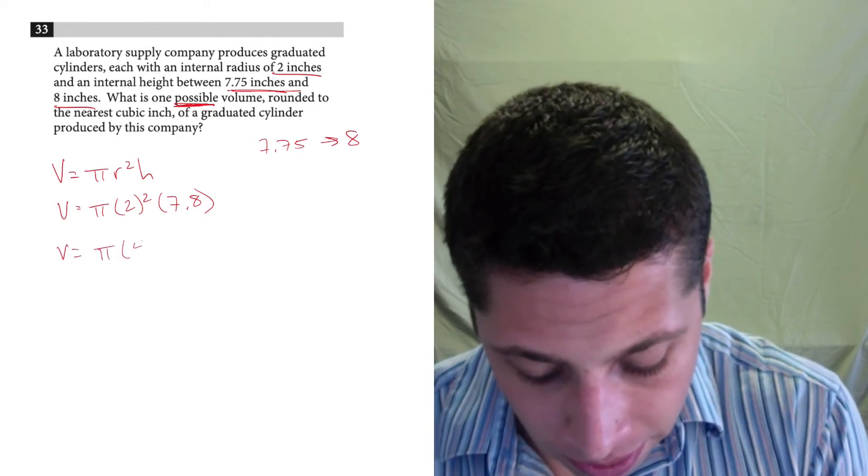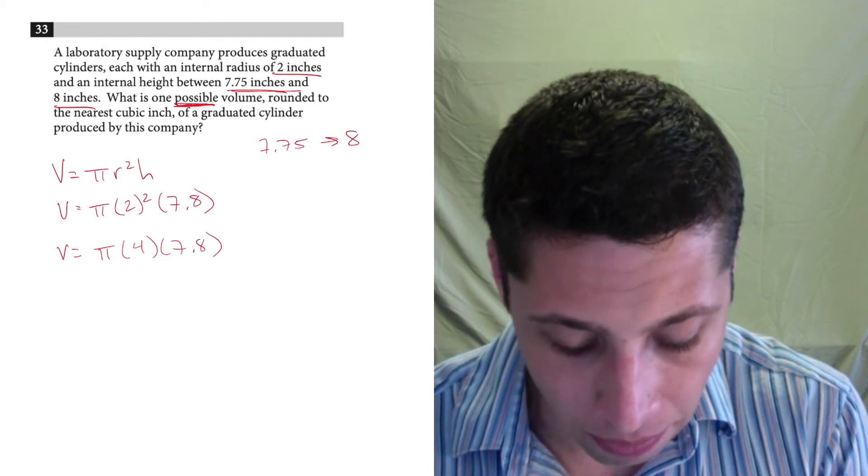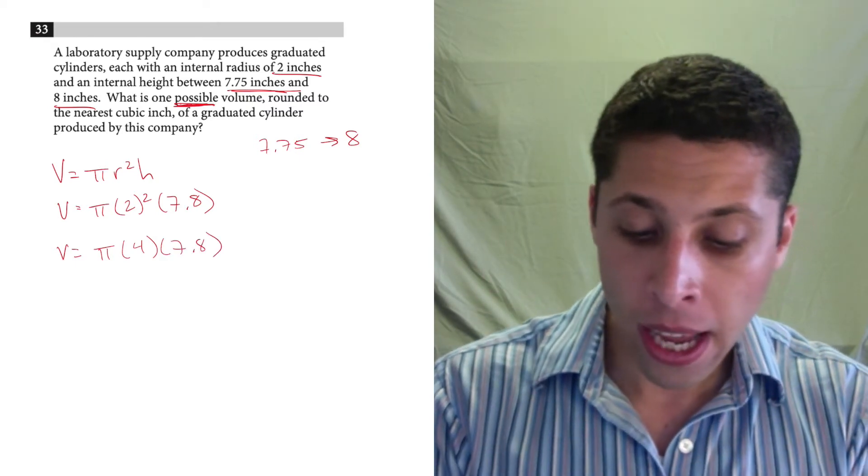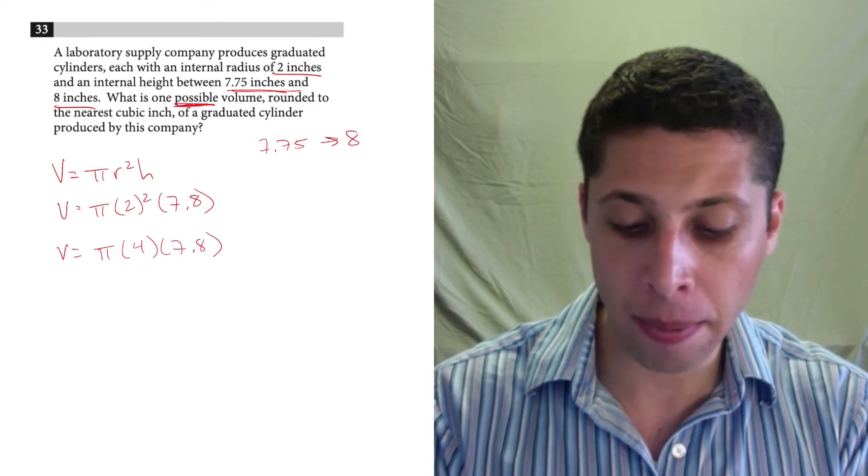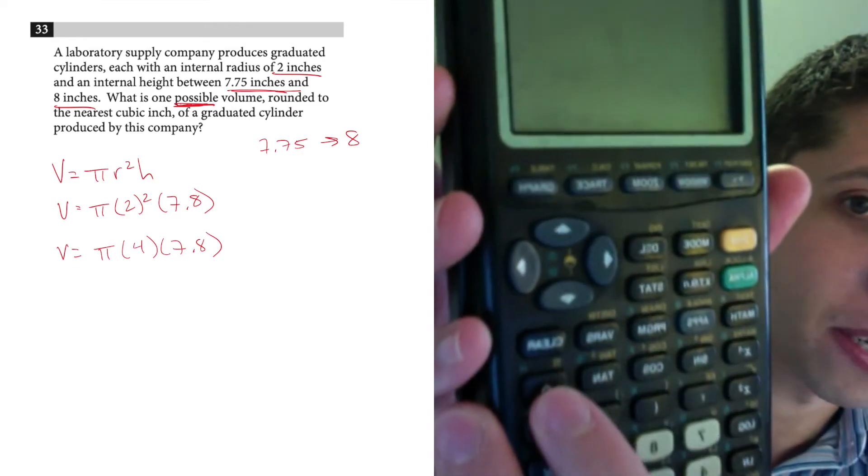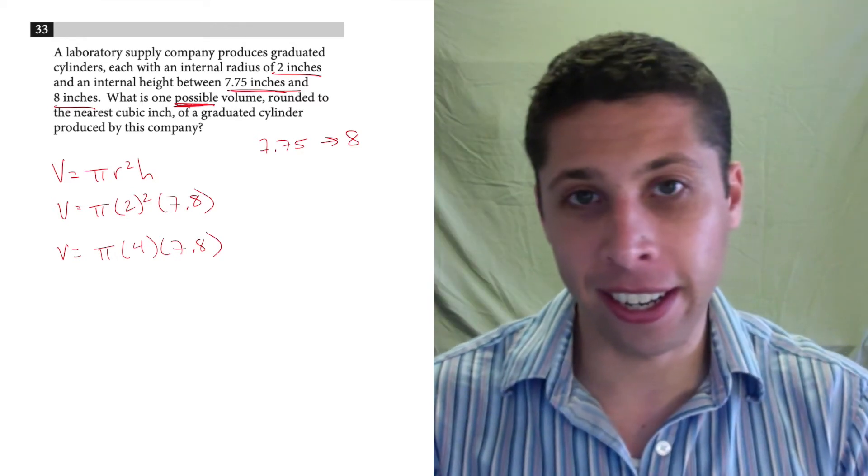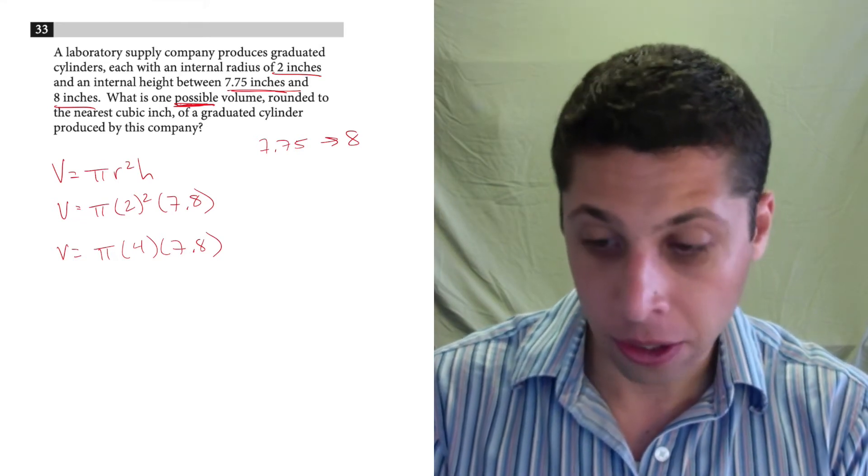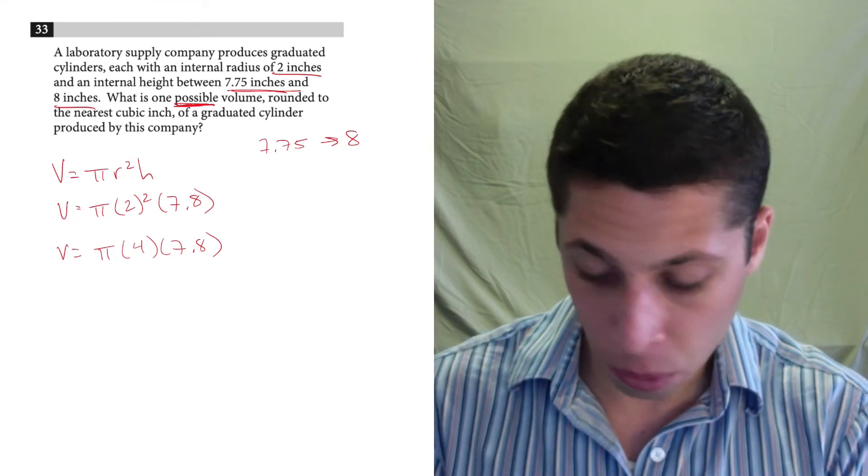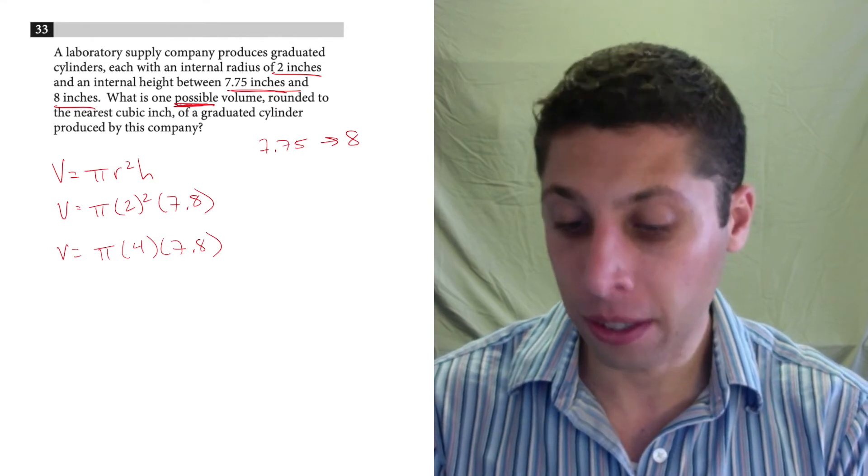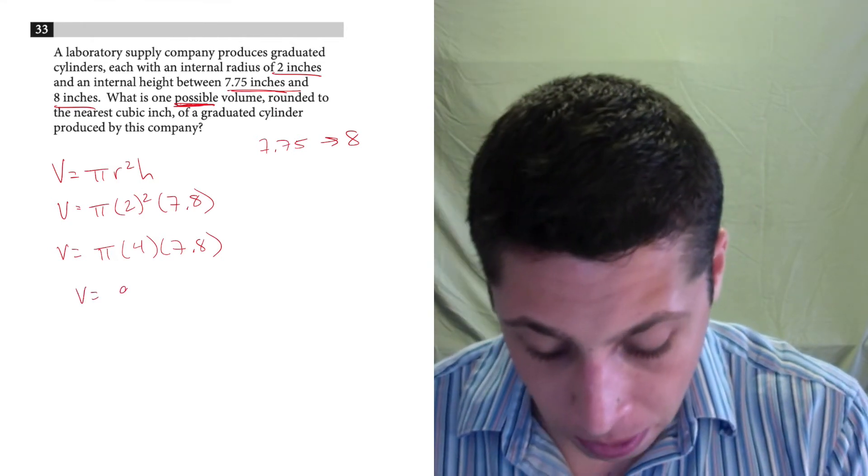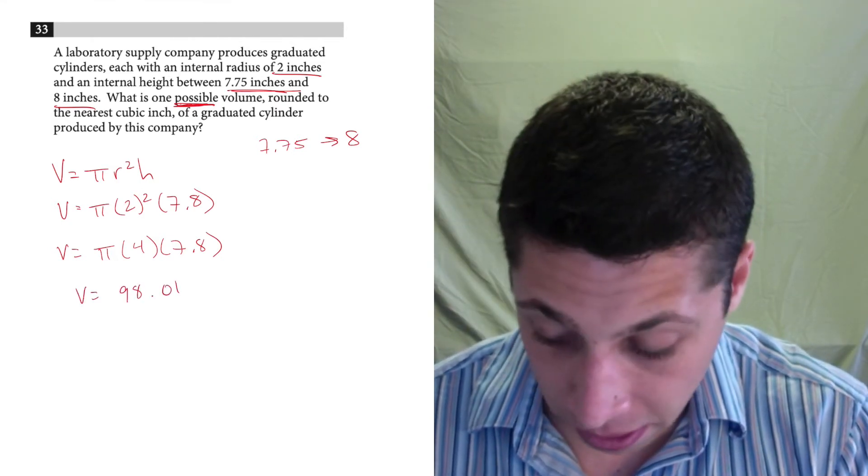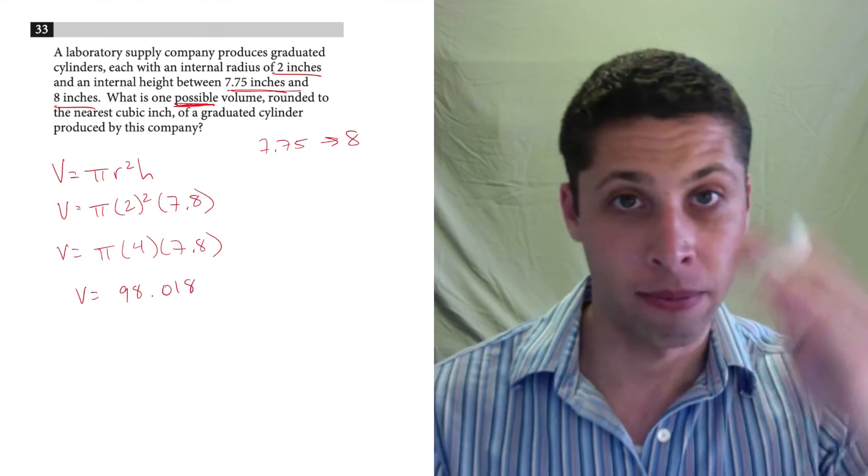So pi times 4 times 7.8. And some calculators have a little pi button. I don't know if you can see that, but it's right there. And if not, remember pi is 3.14, but you can do it either way. So pi times 4 times 7.8. And I get my volume to be 98.018 with some extra decimals.